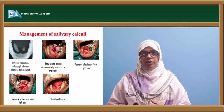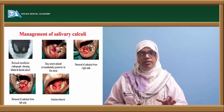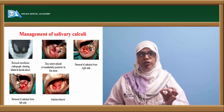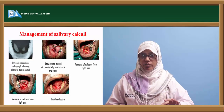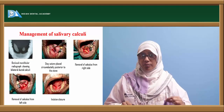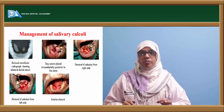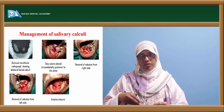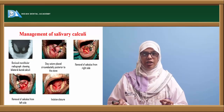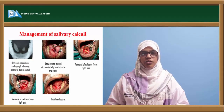To manage salivary calculi surgically: place a stay suture on the duct posterior to the calculi and one anterior to it so it doesn't slip. Make an incision on the crest over the calculi, dissect and remove the calculi, then suture back. This is similarly performed on the other side.